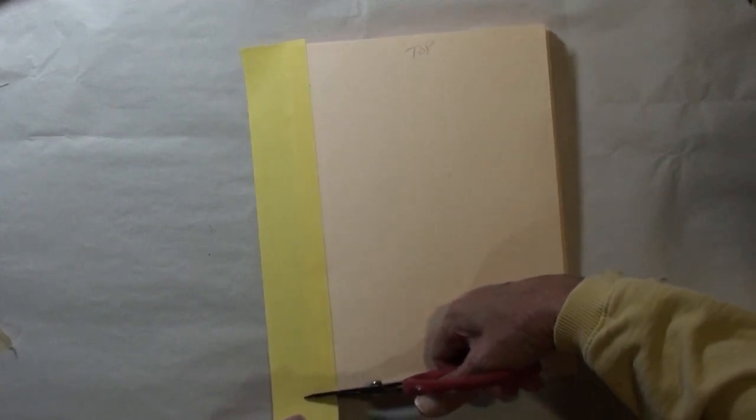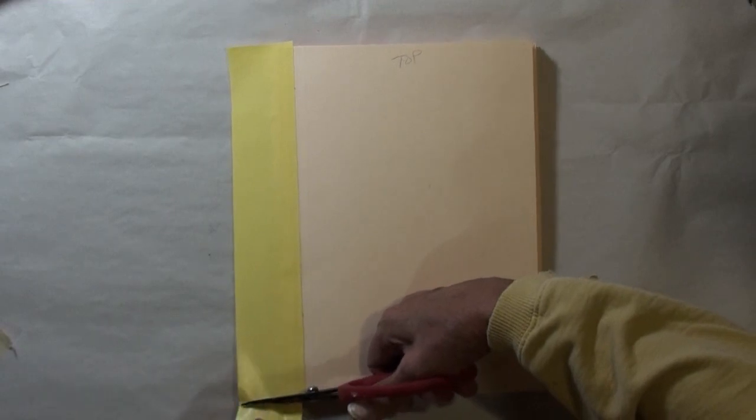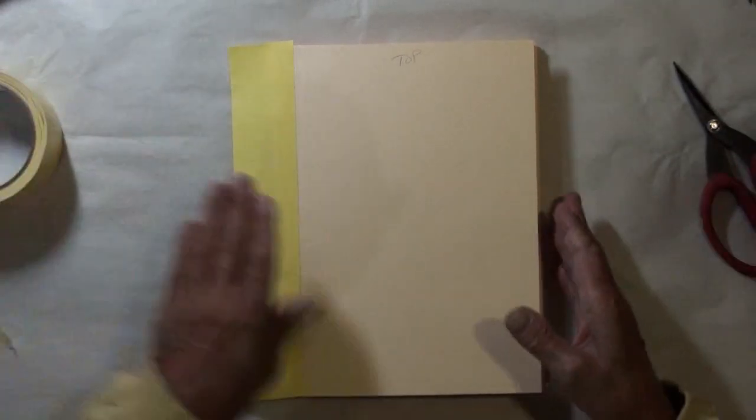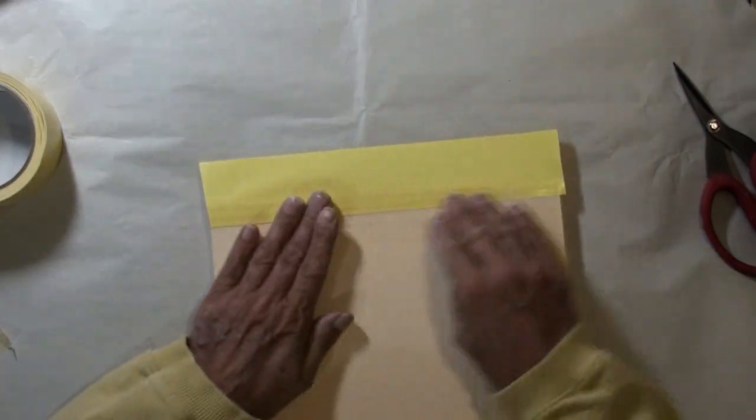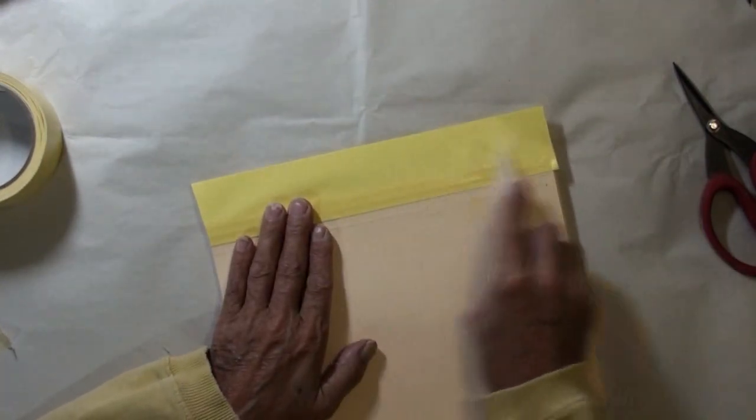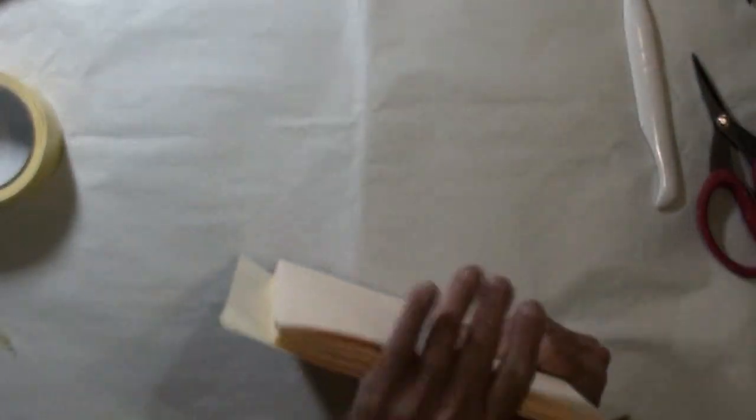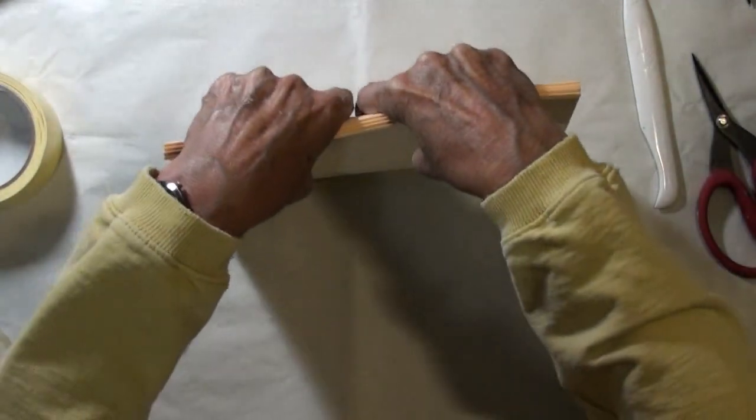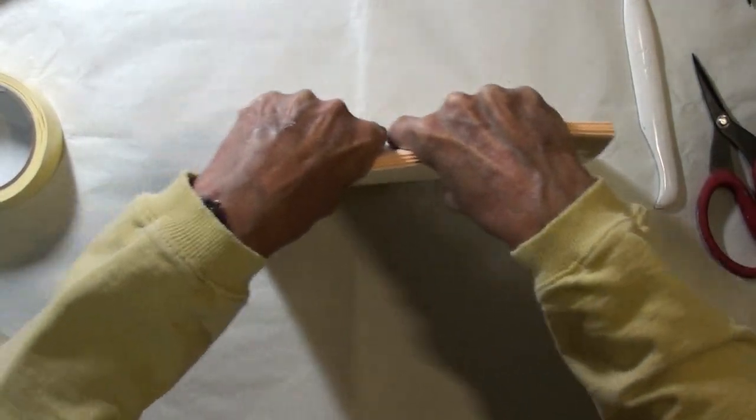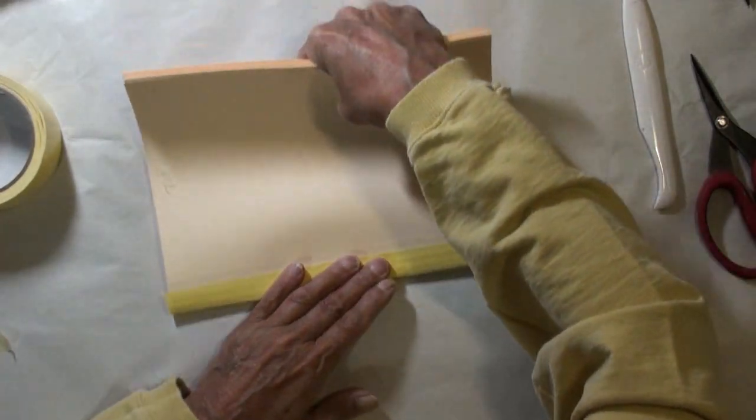I really like using masking tape because it will burnish that off. And then I'm just going to use the book itself to fold it, burnish it, and fold it back over.